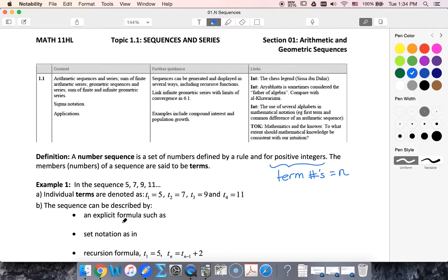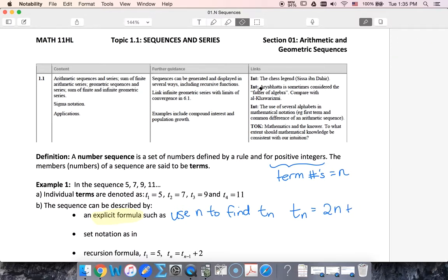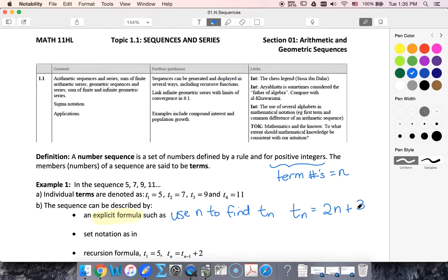When we use an explicit formula, we're going to use n to find the nth term. So in this case, our explicit formula looks like it's going to be 2n plus 3. So if I plug in 1, I would get 5. If I plug in 2, I get 7. So this is my explicit formula. I'm using n to find the nth term.